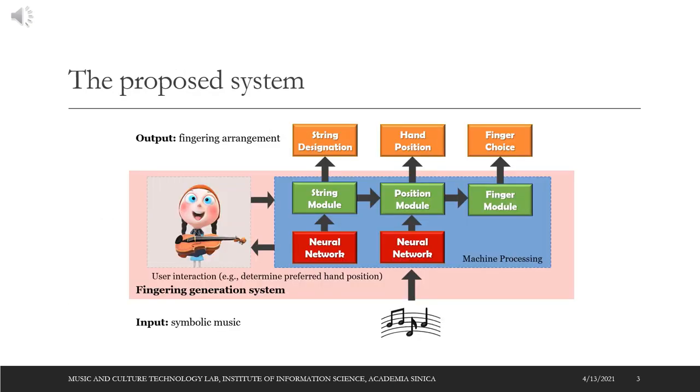Here is the framework of the proposed fingering generation system. As shown here, the proposed system is constructed with three modules for predicting string designation, hand position, and fingering choice. These modules are neural networks in which the inputs can be manipulated by users according to the needs and ease of strings and ease of finger transition.